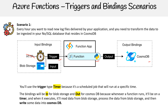Whenever the function runs, it'll be on a timer. When it executes, it'll read data from blob storage, process the data from blob storage, and then write some data to Cosmos DB. The key thing here is that this runs on a schedule — you're not invoking it like with an API request, this is invoked on schedule.